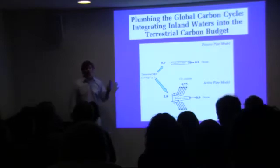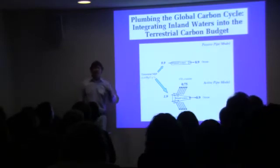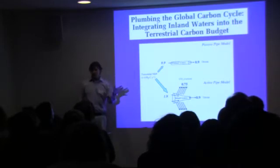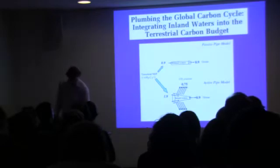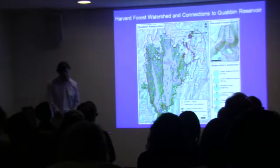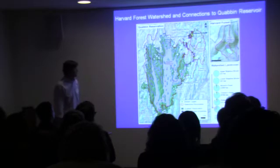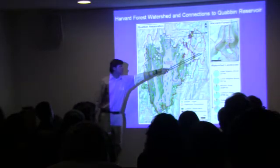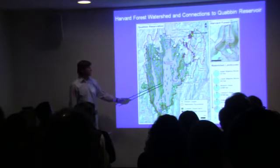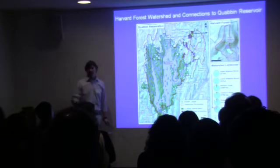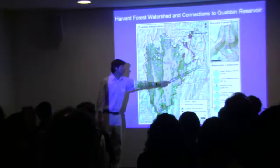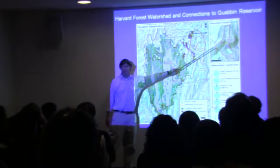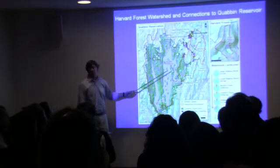We're poised here at Harvard Forest to quantify the role of freshwater ecosystems in terrestrial carbon cycling, because we have the right data sets and the right scale. This is Harvard Forest's Prospect Hill Tract in the context of a major watershed, the East Branch of the Swift River, draining to the Quavin Reservoir. I'm going to talk on two scales today: that of the Prospect Hill Tract at Bigelow Brook, and that of the East Branch Swift River.